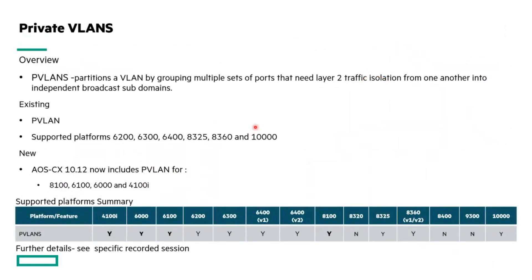Moving on to private VLANs — we didn't have full support for all platforms prior to 10.12, and we still don't, but we have extended support to most platforms. Existing platforms 62, 63, 64 are supported, and with 10.12 we now also have support for 8100, 6100, 6000, and the 4100i. Platforms that still don't support it are the 8320, 8400, and 9300. The feature allows you to take a primary VLAN and partition it into several sub-VLANs for security purposes.